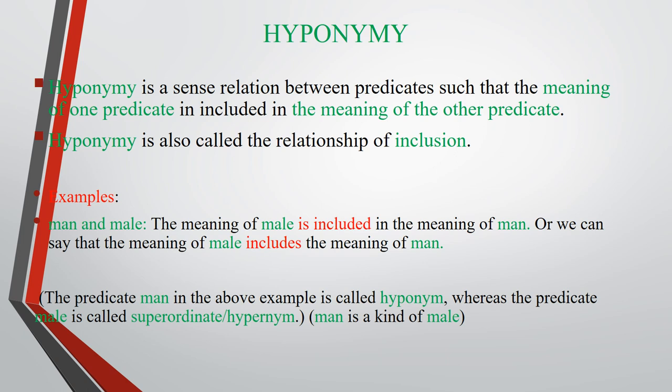The third type of sense relationships of similarity is hyponymy, which is a sense relationship between predicates such that the meaning of one predicate is included in the meaning of the other. Hyponymy is also called the relationship of inclusion. For example, 'man' and 'male': the meaning of 'male' is included in the meaning of 'man.' The predicate 'man' is called the hyponym, whereas 'male' is called the superordinate or hypernym — i.e., man is a kind of male. The hypernym is the more general term, and the hyponym is the more specific term.